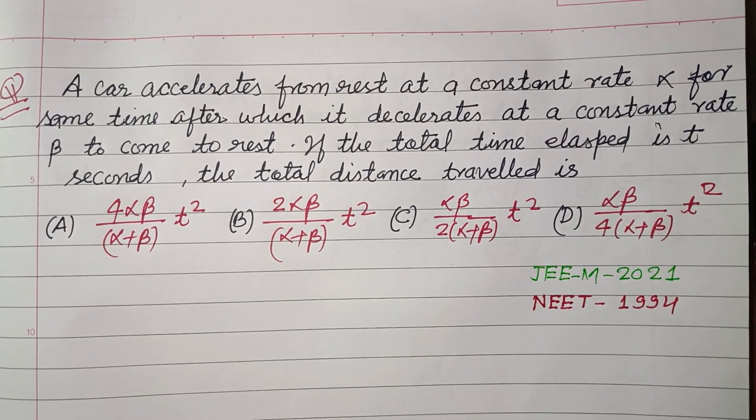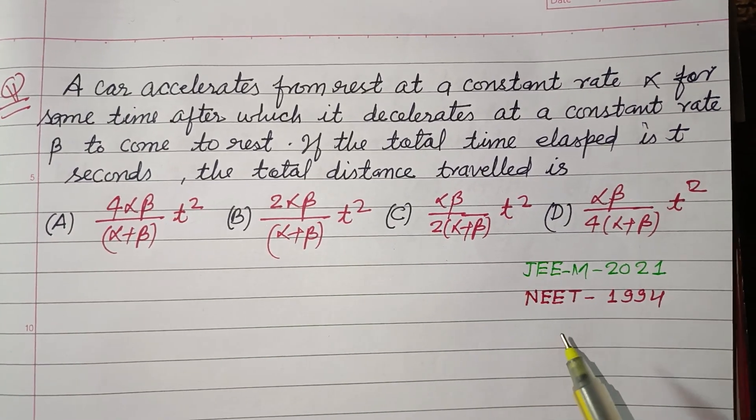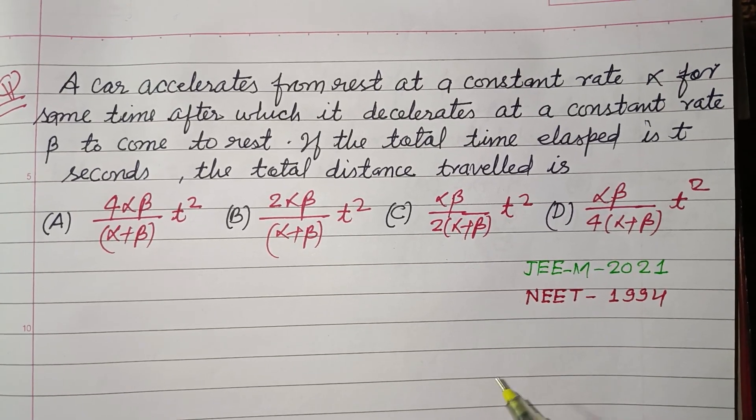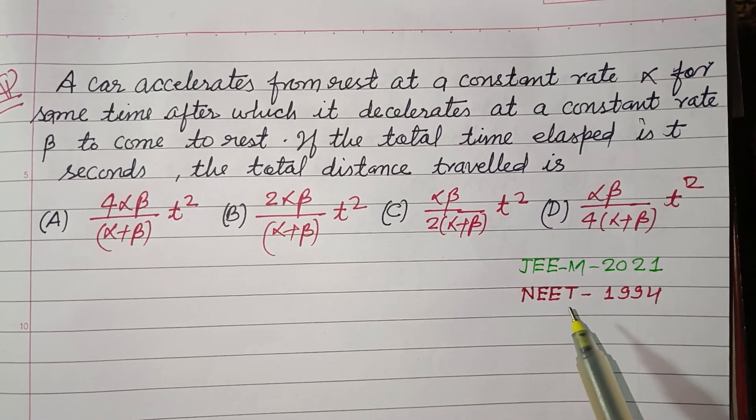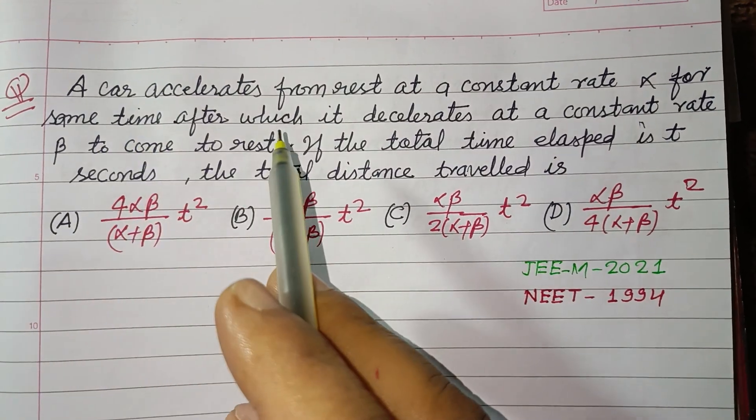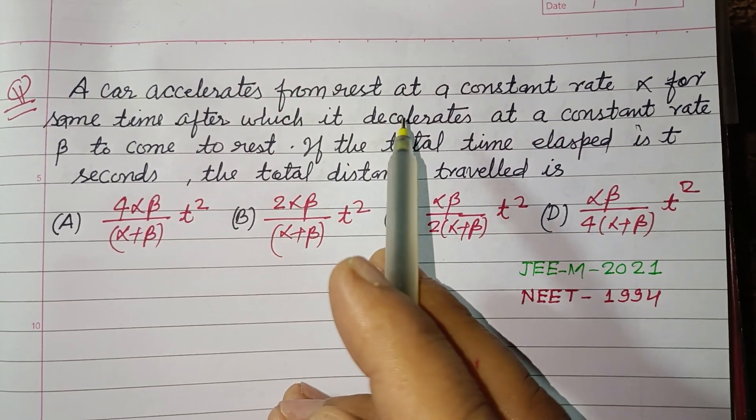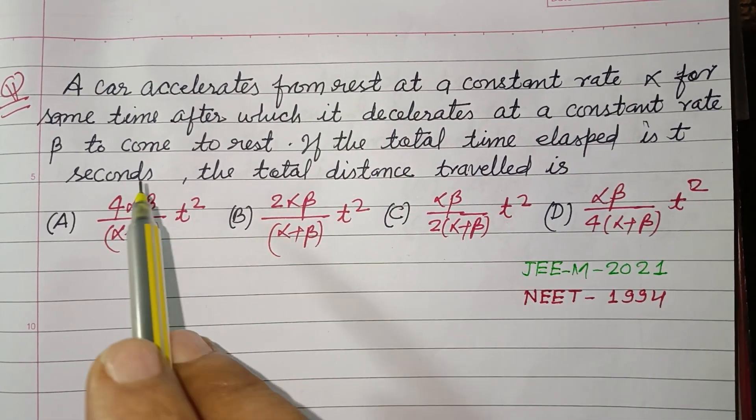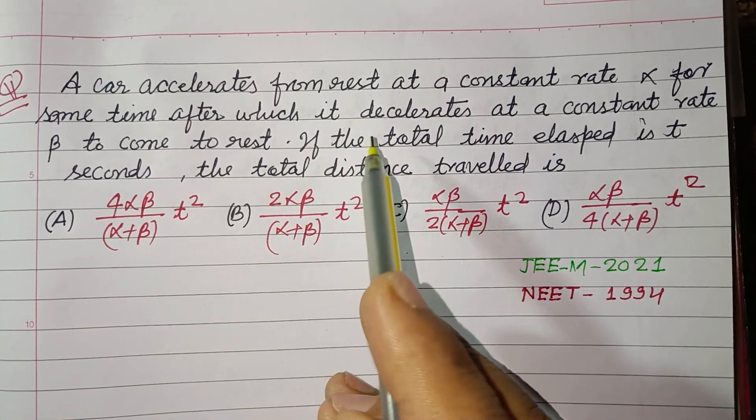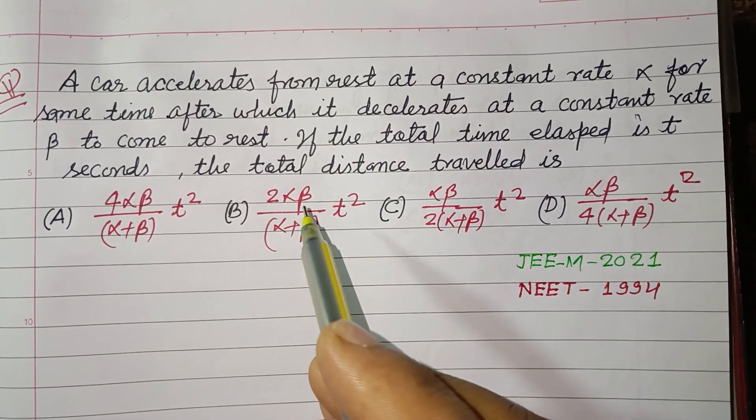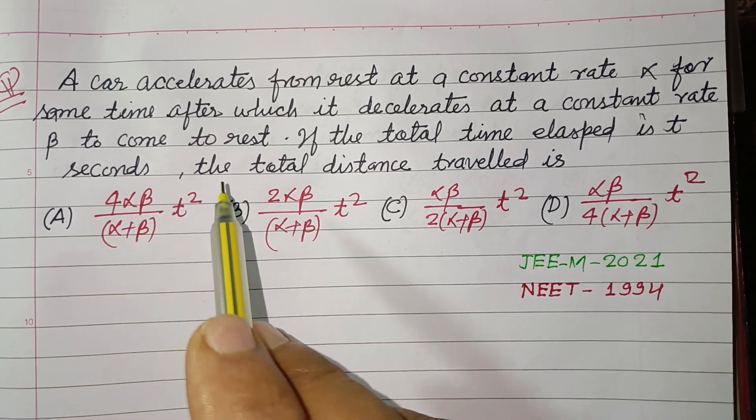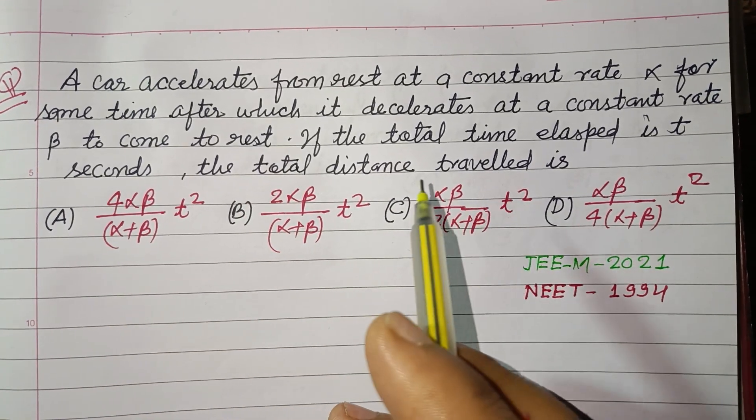Hello viewers, warm welcome to this YouTube channel. This is a question from JEE Main 2021 and also asked in NEET 1994. A car accelerates from rest at a constant rate α for some time, after which it decelerates at a constant rate β to come to rest. If the total time elapsed is t seconds, then the total distance traveled is...